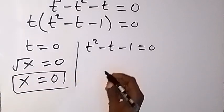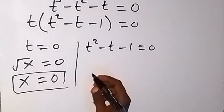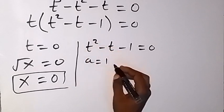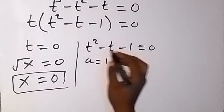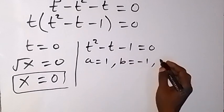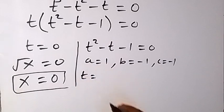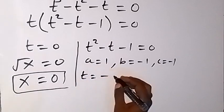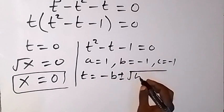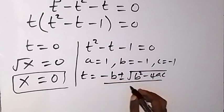Now let's solve t² - t - 1 = 0. This is a quadratic equation where a, the coefficient of t², is 1; b, the coefficient of t, is -1; and c, the constant, is also -1. Using the quadratic formula: t = (-b ± √(b² - 4ac)) / 2a.